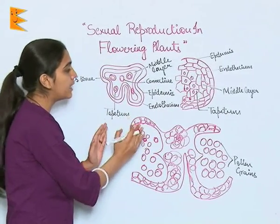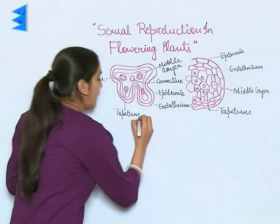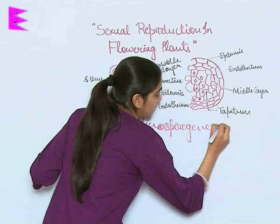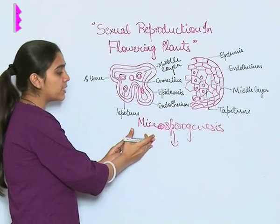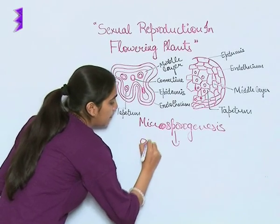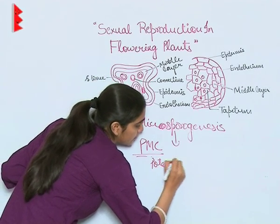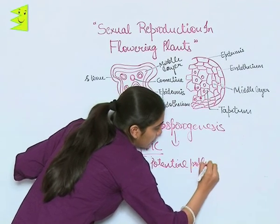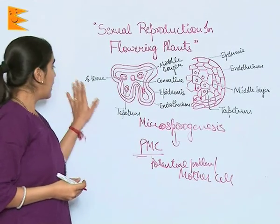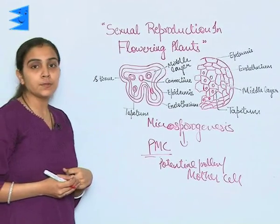To understand it further, let us study microsporogenesis. Microsporogenesis is the process of formation of microspores by PMC — the pollen mother cell. These sporogenous tissues undergo meiotic division and give microspore tetrads.